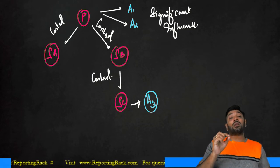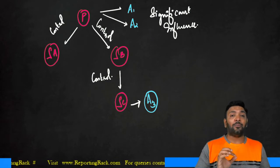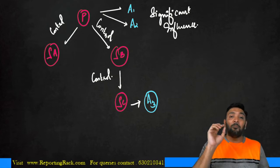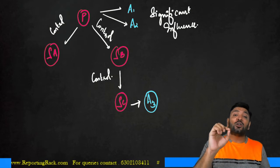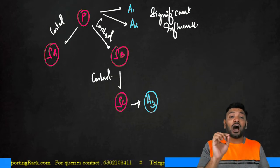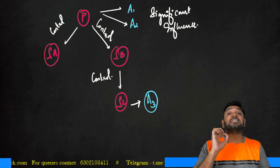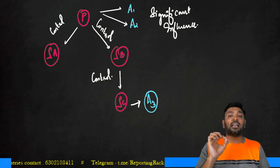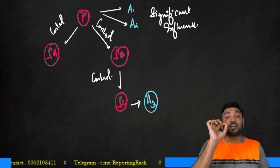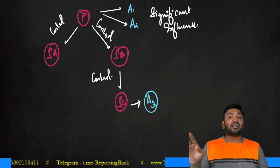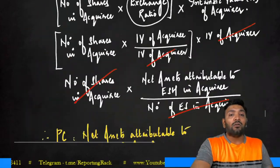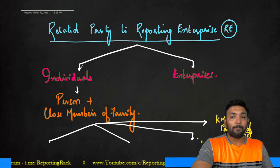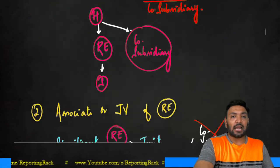If I want to give the related parties of P: SA, SB, SC, A1, A2, A3. For SA: P, SB, SC, A1, A2, A3. For SB: P, SC, A1, A2, A3. But for A1, P is related, and SA, SB, SC are also related. However, A2 and A3 are not related to A1, because between A1, A2, and A3 they share only common significant influence — not control.